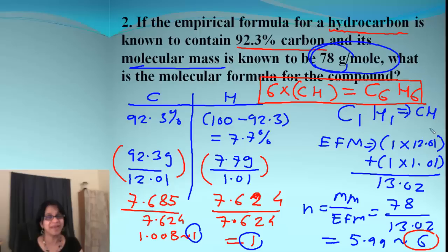Remember, our main steps for finding the empirical formula from percent: percent to mass, mass to moles, divide by the smallest, and then multiply to get whole numbers. I hope you guys are having fun learning molar mass and empirical mass.